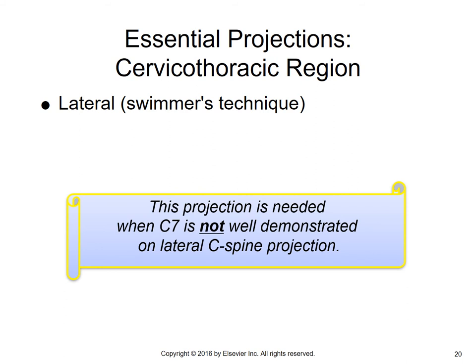When we do the AP we can see all 12 thoracic vertebrae. However, on the lateral, the shoulders will obscure the upper thoracic vertebrae, so we need to perform what is called the swimmer's technique. This projection, found in the cervical spine chapter, is incorporated for the cervical-thoracic area and is needed when C7 is not well demonstrated on the lateral C-spine projection, or when the upper thoracic vertebrae are obscured by the shoulders.